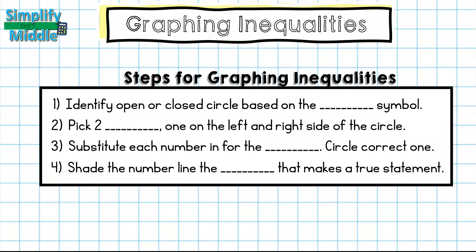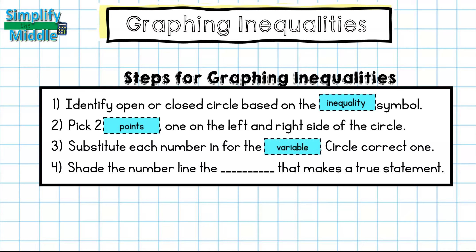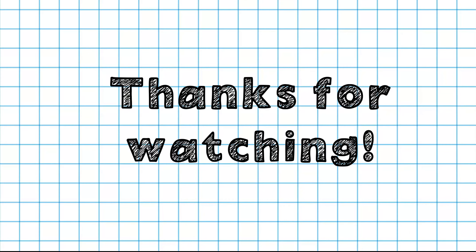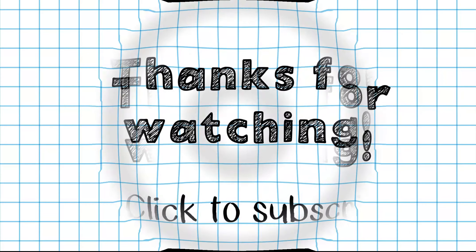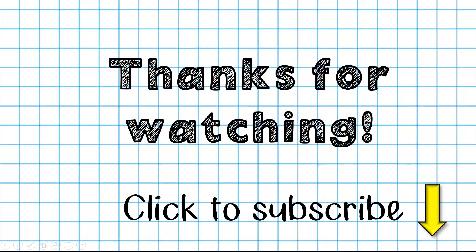Let's recap the steps for graphing inequalities. First, identify open or closed circle based on the inequality symbol. Then pick two points — one on the left and one on the right side of the circle. Substitute each number in for the variable and circle the correct one. Then shade the number line in the direction that makes a true statement. That wraps up our lesson — thanks so much for tuning in. Feel free to click to subscribe for this and other lessons. Until next time!